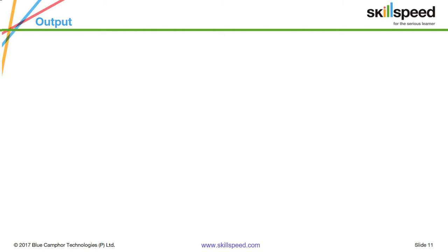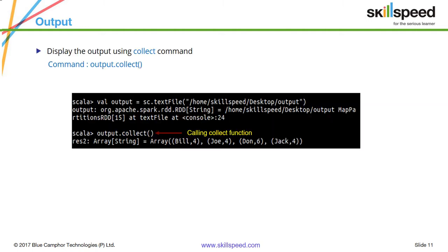To get an idea about the final result, you can do output.collect(). The collect action shows you the final result contained in the RDD called output. As you can see, we have counted the individual words — bill, jack, and joe repeating four times, and don repeating six times. This is a simple example of a Spark program that counts the number of words in any input file.